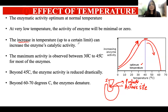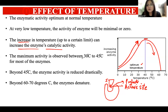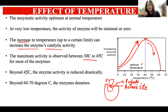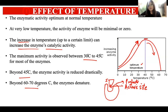The maximum enzyme activity is observed between 30 to 45 degrees Celsius for most enzymes — this is the optimum temperature. Beyond 45 degrees Celsius, enzyme activity is reduced drastically due to the loss of three-dimensional conformation. If the temperature is increased even further, there will be denaturation of the enzyme, meaning it will lose its conformation completely.